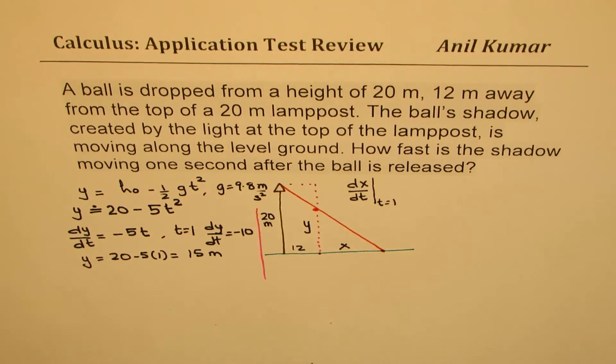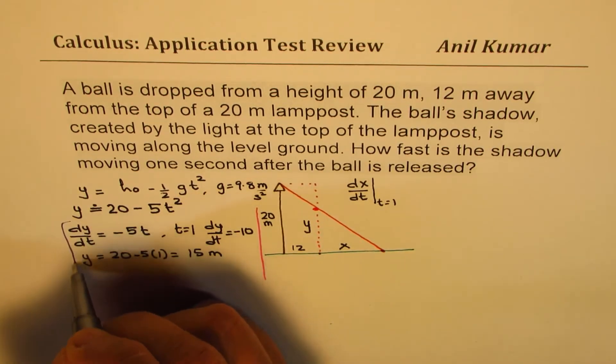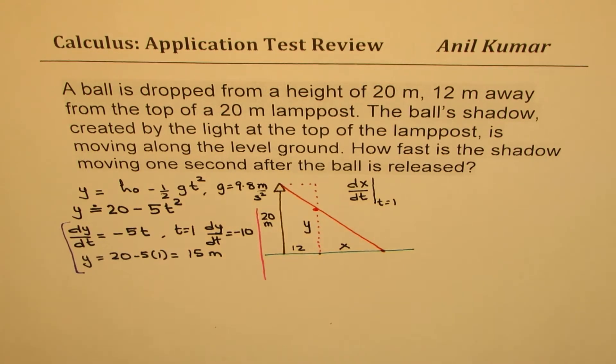Let us also find the height when t is 1. So y equals 20 minus 5 times 1, which is 15 meters. So we have two things which are important to take into consideration, these two, as we move along.